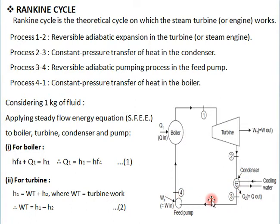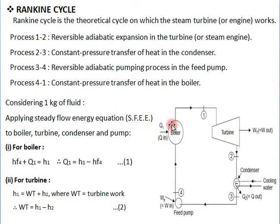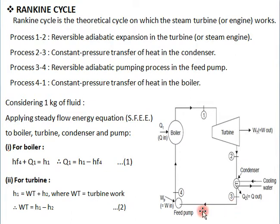Process 3 to 4 is a reversible adiabatic pumping process, or isentropic compression, where the cooling water's pressure is increased and it is passed to the boiler. Finally, process 4 to 1 is a constant pressure heat addition process — inside the boiler, coal is combusted, heat is generated, and that heat converts water into steam. So the four processes of the Rankine cycle are: isentropic expansion, constant pressure heat rejection, isentropic compression, and constant pressure heat addition.